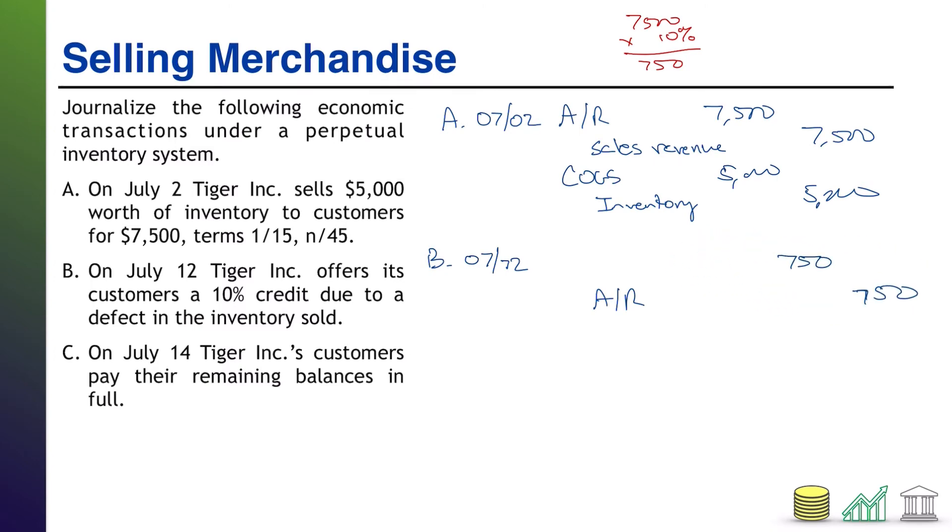Instead, what we have is a contra revenue called sales returns and allowances. It doesn't matter whether it was a return or whether it was an allowance. If you give the customer a discount for what is otherwise a problem with the inventory, you are going to debit this account, sales returns and allowances. That is going to be a contra revenue that then lowers sales revenue on the income statement. So that's B.